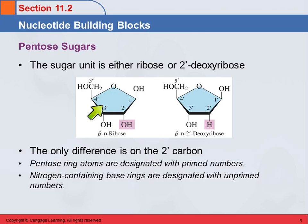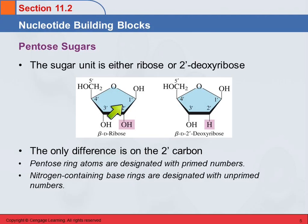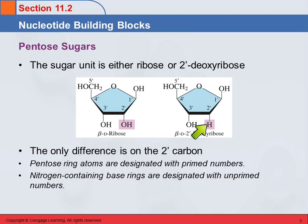Here we're numbering the carbons the same way we did before, but we put a prime on them. So what they've chosen to do is put prime numbers on the sugar rings. The pentose ring atoms are designated with primed numbers — 1', 2' — and the difference between these two sugars is on the 2' carbon. This one has the hydroxy group, and this one does not. So this one's missing the oxygen, so it's called deoxy — 2'-deoxyribose because it's missing an oxygen on the 2' carbon.